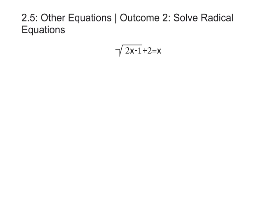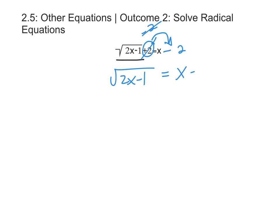In this example we're going to isolate the square root of 2x minus 1 on the left hand side and move the plus 2 over to the other side. Because it's adding 2, to get rid of it we're going to subtract 2 on either side. That leaves us with the square root of 2x minus 1 on the left and x minus 2 on the right, with the radical now isolated.